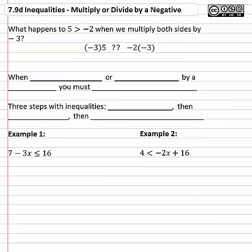As we set this up, I want to first consider the inequality 5 > -2. I think we can agree that's a true statement. What we're going to do is, with equations, we can do the same thing to both sides and things should stay true. So we're going to multiply the left side by -3 and the right side by -3, and we're going to see what happens.